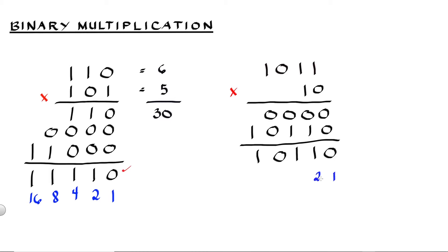To check our answer, we have place values 1, 2, 4, 8, and 16. For 1, 0, 1, 1, 1 we have 16 plus 4 plus 2 plus 1 is equal to 23 — wait, 8 plus 2 plus 1 is equal to 11. And 1, 0 is equivalent to 2. And 11 multiplied by 2 is equal to 22. Our binary product equals 16 plus 4 is 20, plus 2 is equal to 22. So our answer is correct.